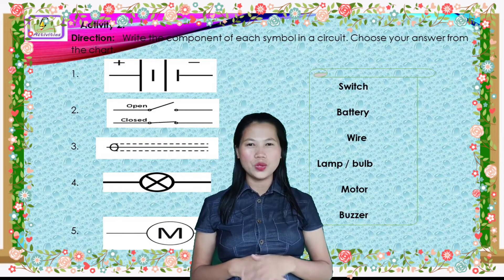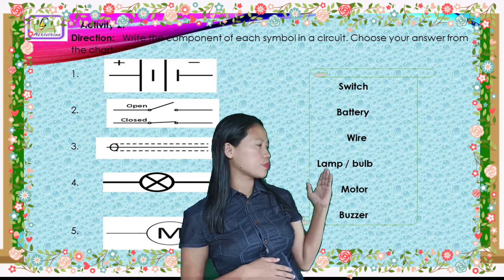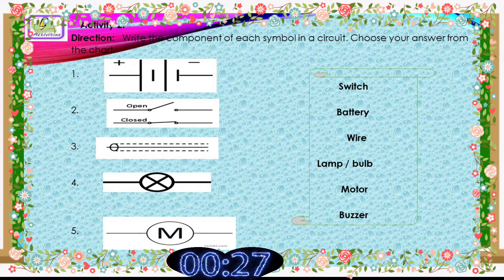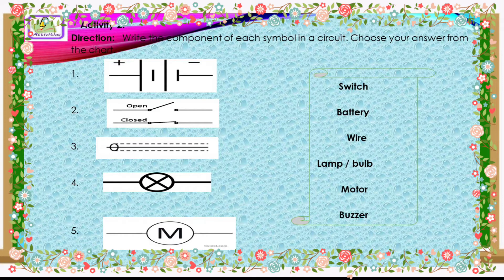For Activity 2, write the component of each symbol in a circuit. Choose your answer from the chart. Let's check Activity 2: Number 1, battery; Number 2, switch; Number 3, wire; Number 4, clamp or bulb; Number 5, motor. If you got it right, you did it!